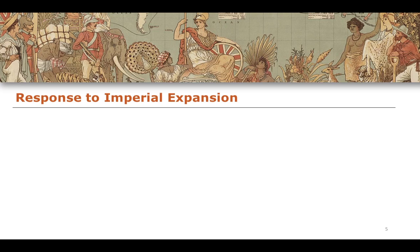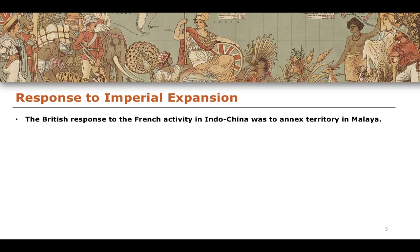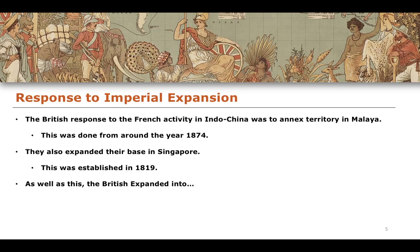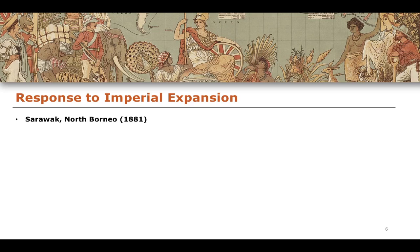We see a lot of imperial expansion during this process. The British response to French activity in Indochina, for example, was to take territory in Malaya in 1874. In addition, the British expanded their bases in Singapore, having established a base there in 1819. The British Empire also expanded into Sarawak in North Borneo in 1881, into Brunei in 1885, and into Upper Burma also in 1885. These are examples of how the British Empire expanded in response to the imperial ambitions of Germany, France and Russia.